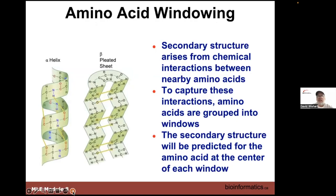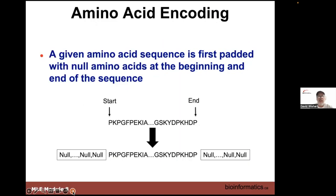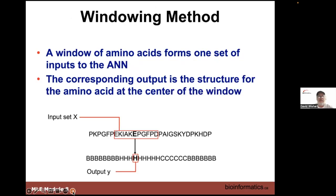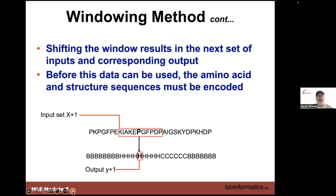As a reminder, secondary structure typically arises from interactions among multiple amino acids, not just individual ones. So we use windowing: we take a collection of 17 amino acids as a window and scan along the sequence, predicting the property of the center amino acid. The window illustrated here is a little smaller than what we normally use, but it semantically shows what we're doing. The center glutamate is a helix; we shift over to the next residue, a proline, which is also a helix, and we slide along through the entire sequence.